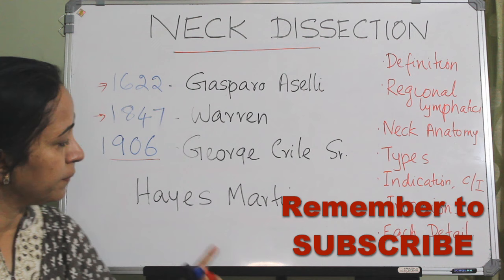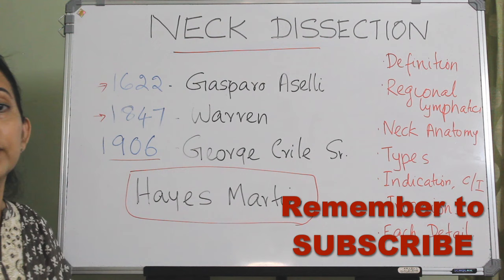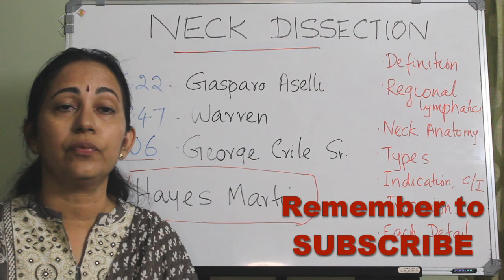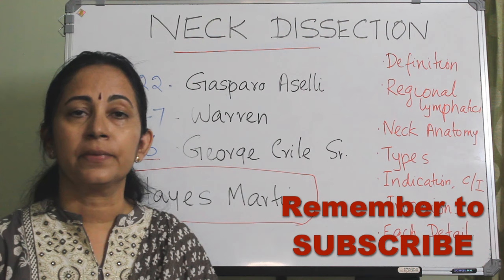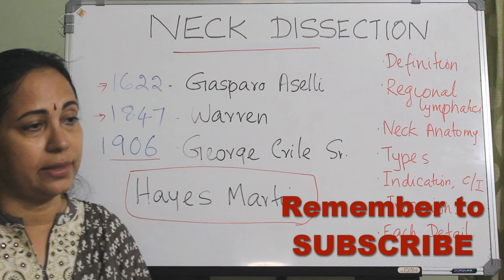Hays Martin is regarded as the father of modern head and neck cancer surgery. The first concise description of radical neck dissection was given by Hays Martin and his associates. This radical neck dissection is still considered the gold standard in the management of metastatic neck nodes.